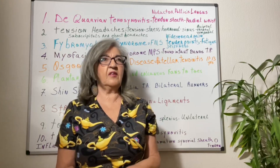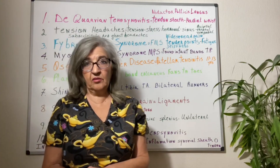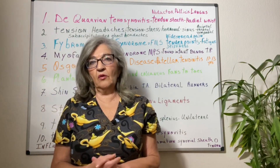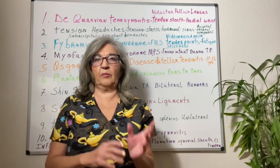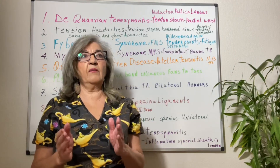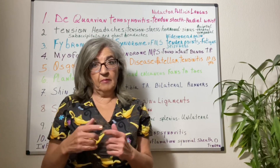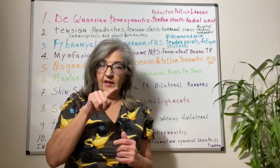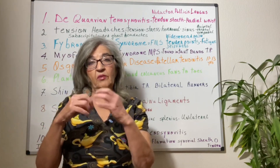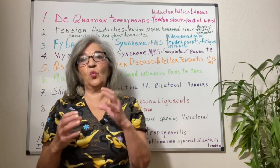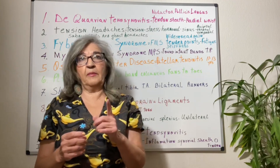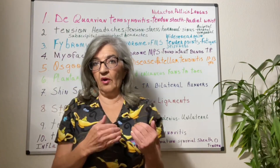Let me start by talking about myasthenia gravis. I had a client with this condition. It's not in the book, but I wanted to touch on it. It's a neuromuscular condition — the connection between the nervous system and the muscle. The sarcolemma is the muscle cell membrane with motor end plates. The nerve releases acetylcholine, a neurotransmitter, and the sarcolemma receives that message. In myasthenia gravis, the breakdown happens right at the neuromuscular junction — the muscle does not receive the message. This only happens in skeletal muscles only.